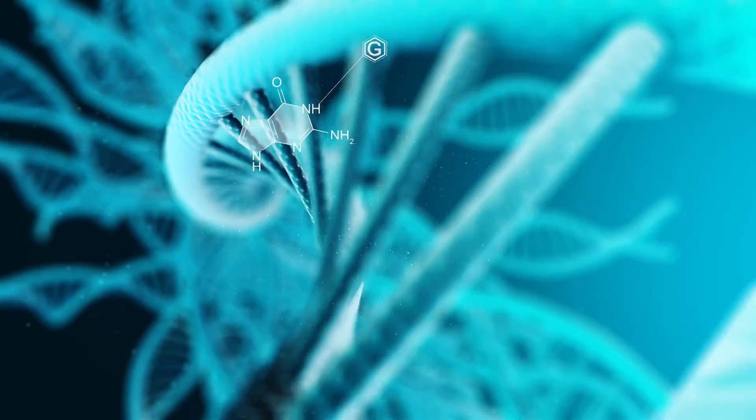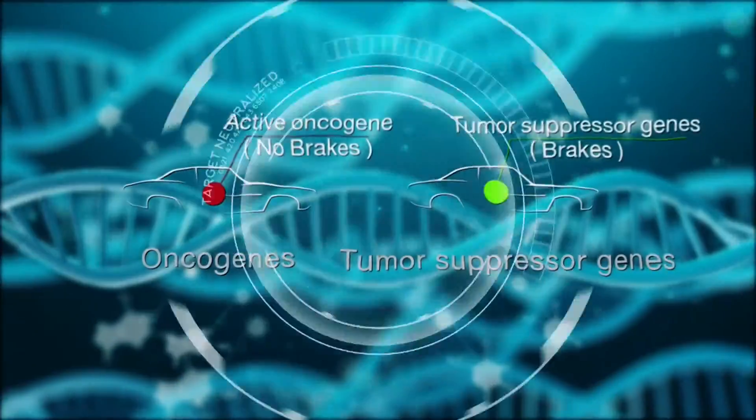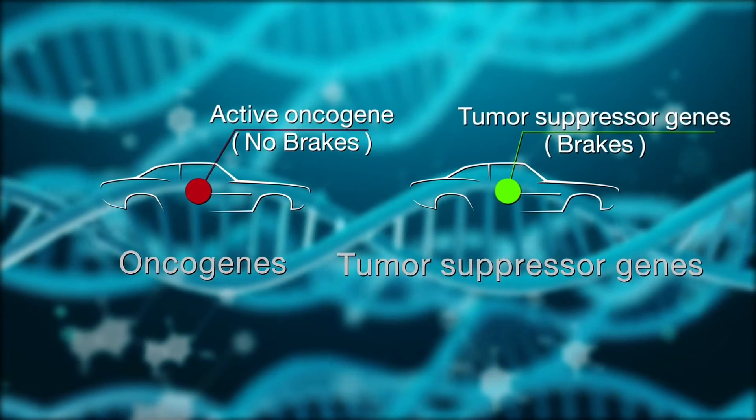Genetic cancer is divided into two major categories. These are oncogenes, which stimulate uncontrolled cell growth, and tumor suppressor genes.